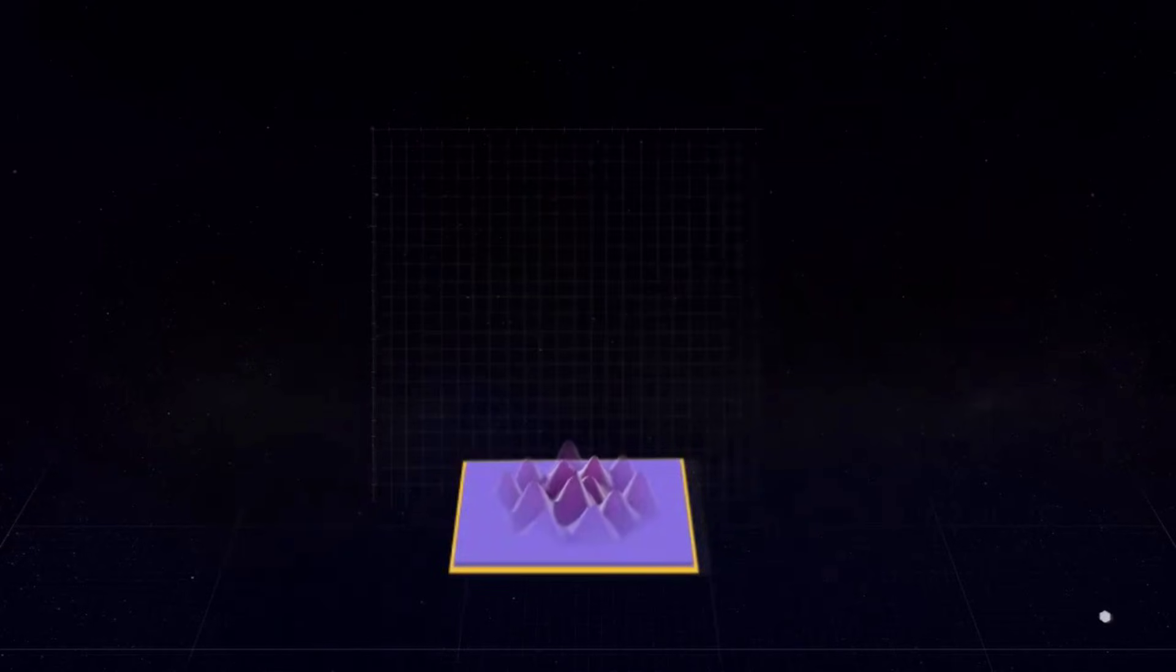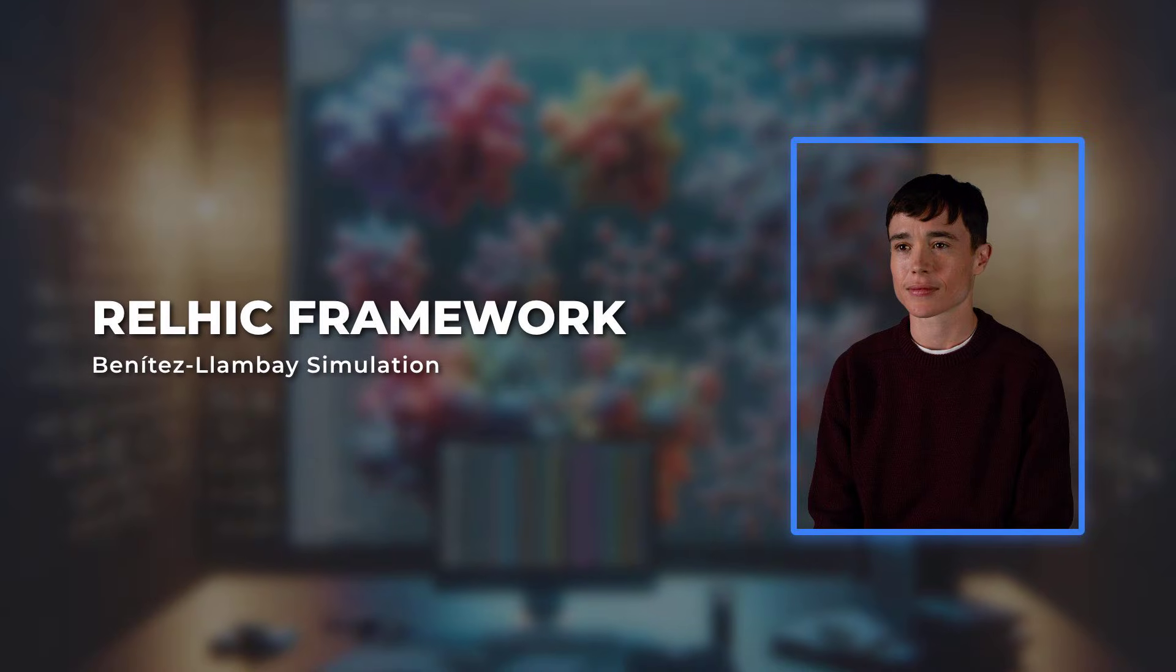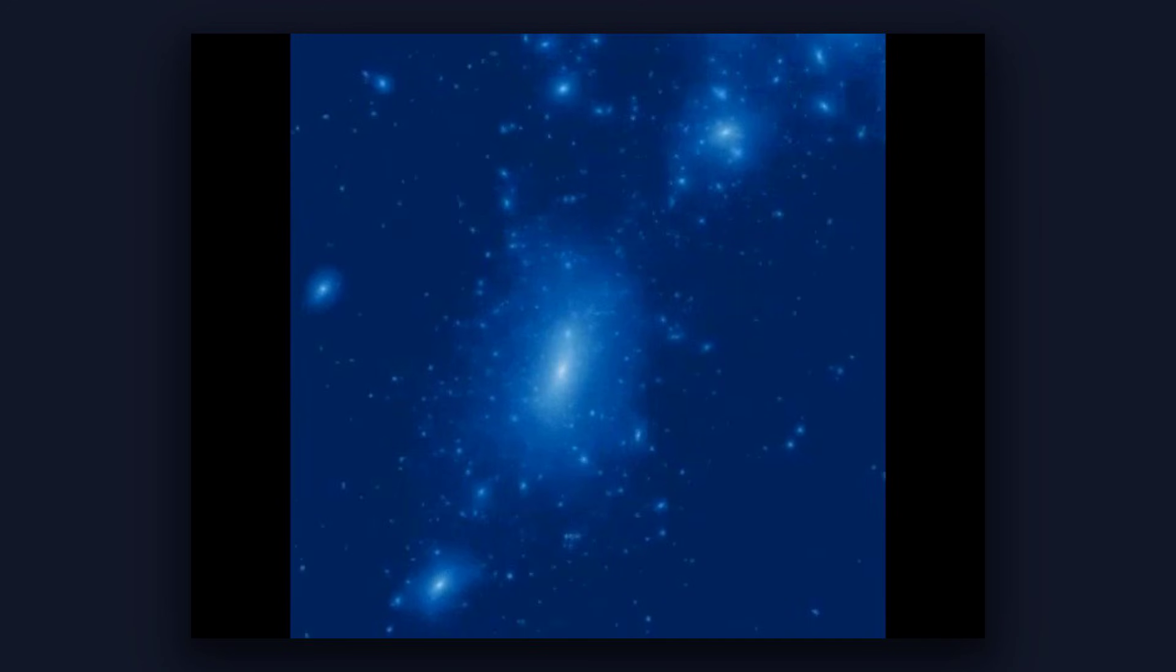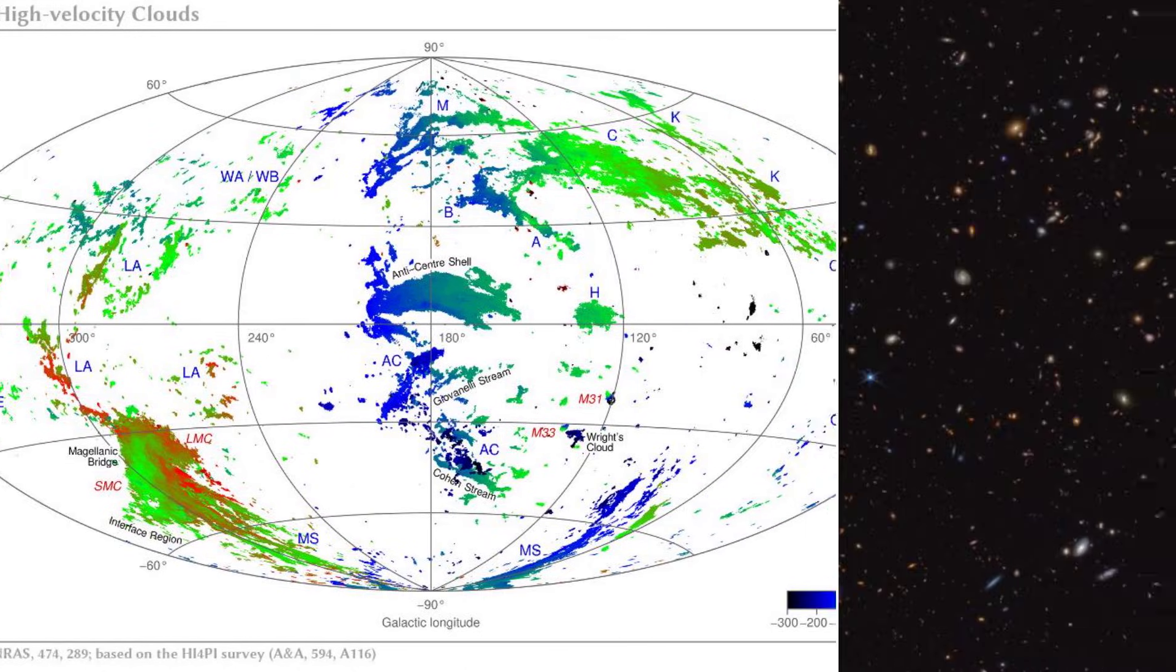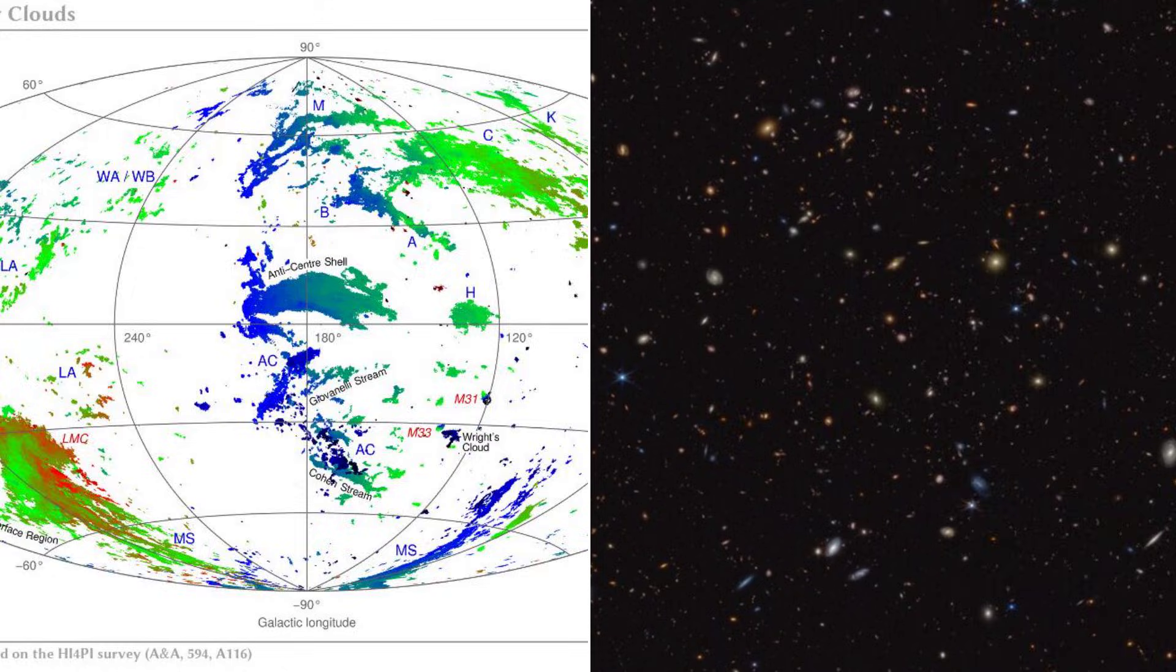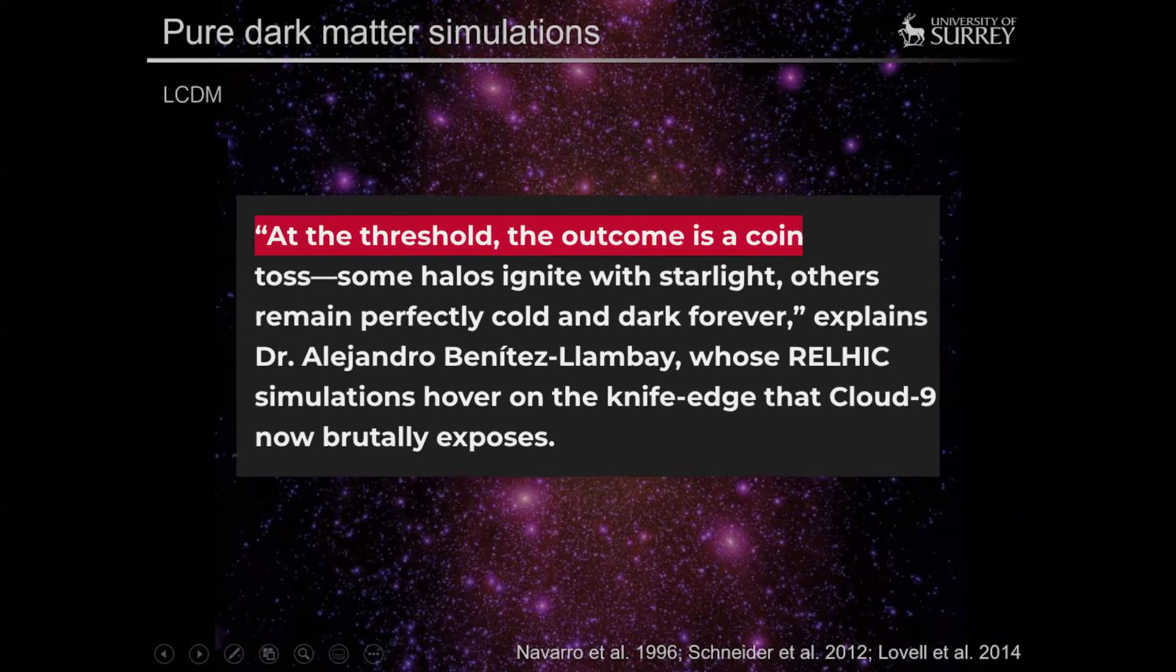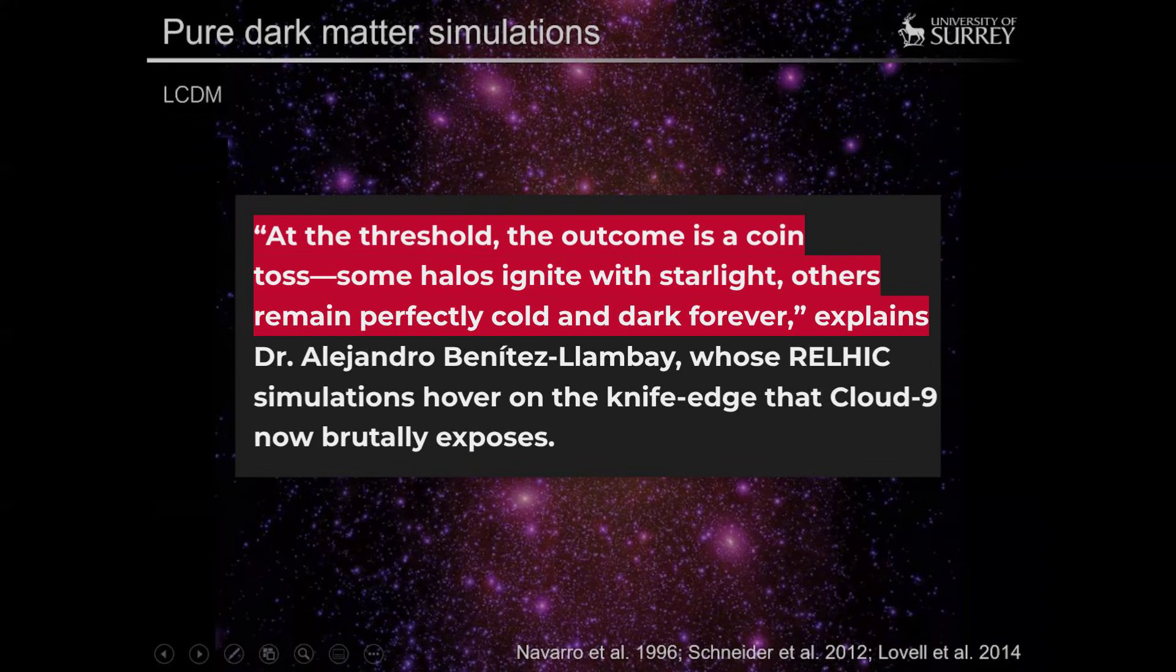The numbers line up. Simulations led by theorists like Alejandro Benitez-Lambe predict that halos just below a few billion solar masses should end up as these failed galaxies, holding onto their gas but never crossing the threshold to ignite star formation. As one simulation lead put it, at the threshold, the outcome is a coin toss. Some halos light up, some stay dark forever.